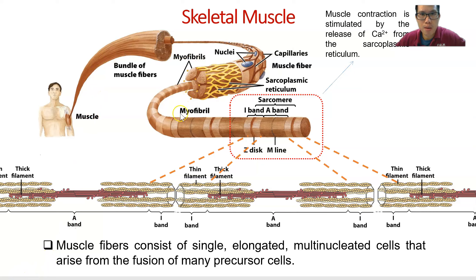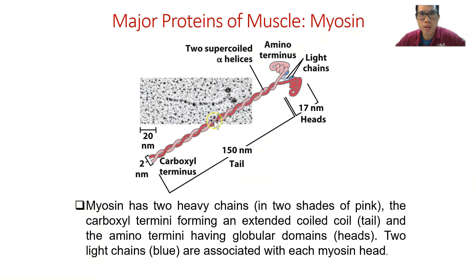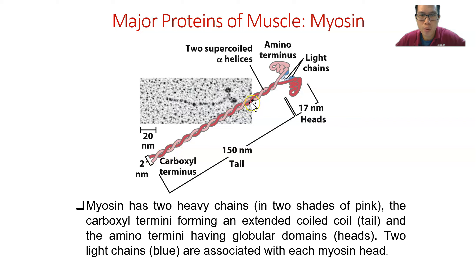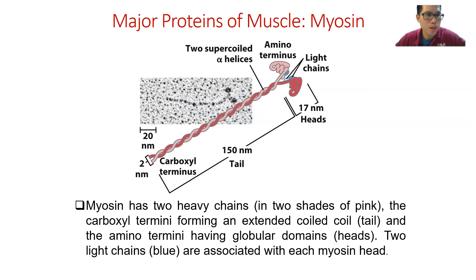Let's look closely at the structure of myosin and actin. Myosin is made of two units intertwined with each other, and there are two myosin heads. The myosin head is what interacts with the actin — there is a myosin binding site on the actin where the myosin head interacts. The coiled structure of myosin increases the strength of the muscle.